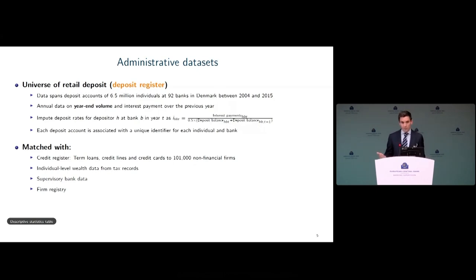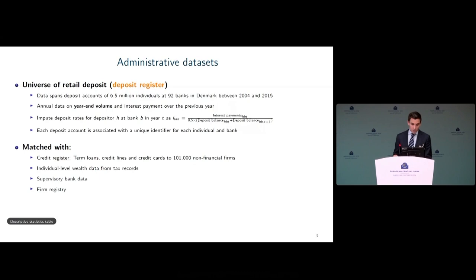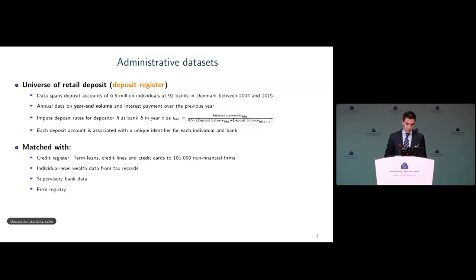Each account features information on both the depositor and the bank. We can link this to banks' supervisory information as well as a credit register where we observe term loans, credit lines, and so on to roughly 100,000 non-financial firms. We can also observe individual tax records and data on depositor wealth.